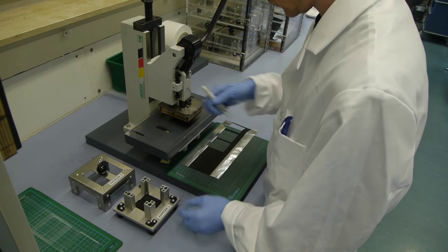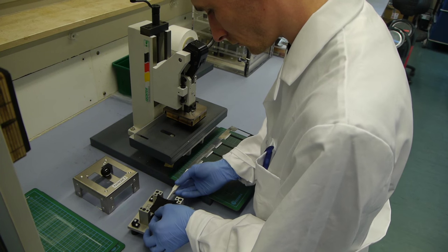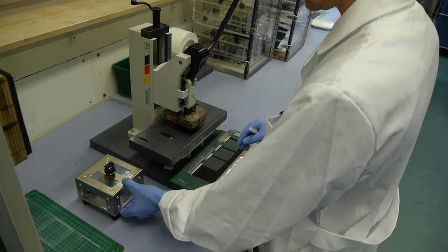The anode is cut from copper foil coated with graphite. It is somewhat larger than a cathode. This is to prevent the formation of lithium deposits at the end of the anode during charging, which could result in short circuits.